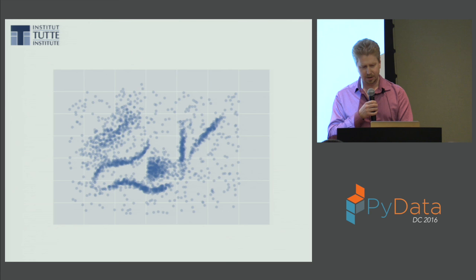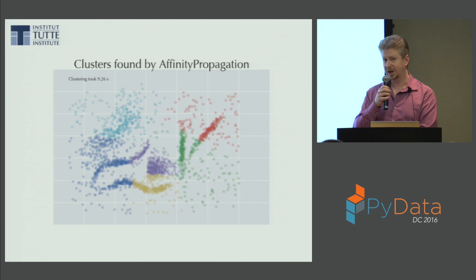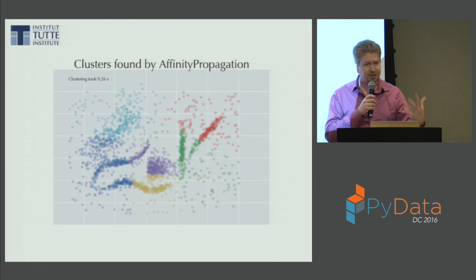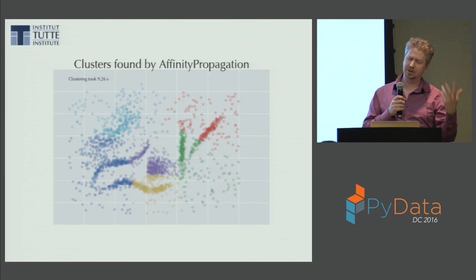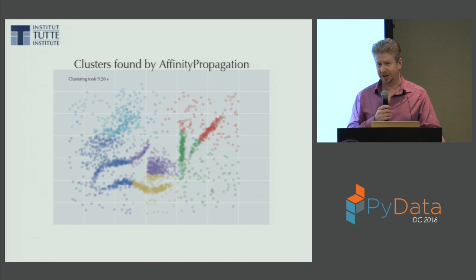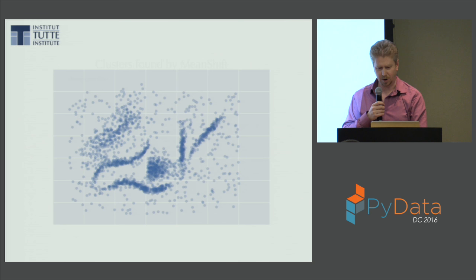Affinity propagation looks surprisingly similar to k-means. That's because its last step is one iteration of k-means. Affinity propagation has every point vote on the exemplar or center that best represents them, which allows non-symmetric similarity measures — my similarity to you can differ from your similarity to me. You don't have to choose the number of clusters, but there's another sensitive parameter you must tune, it's slow, and you still run k-means at the end, bringing back spherical cows and the partitioning problem.